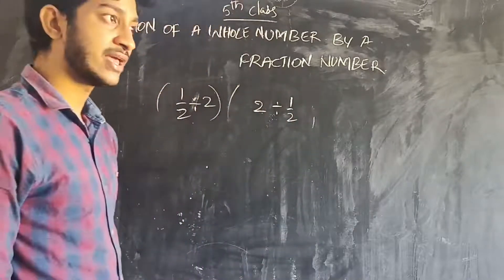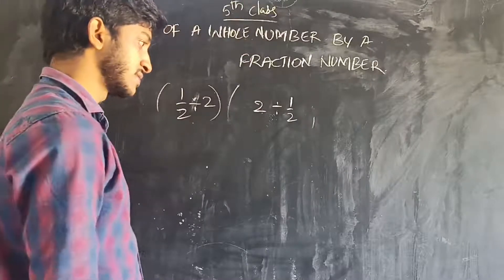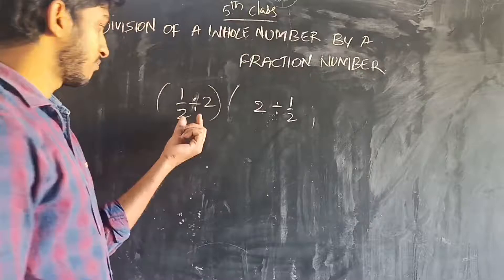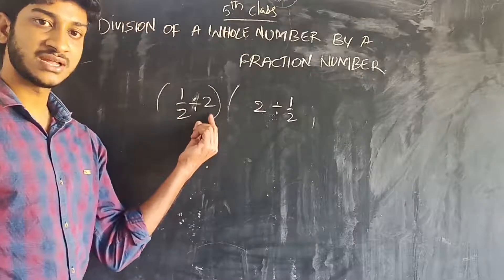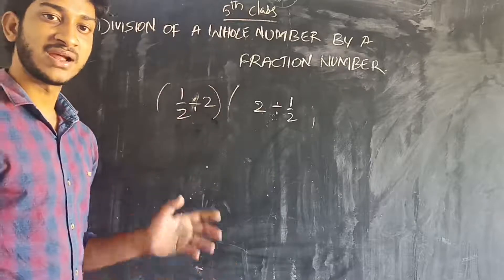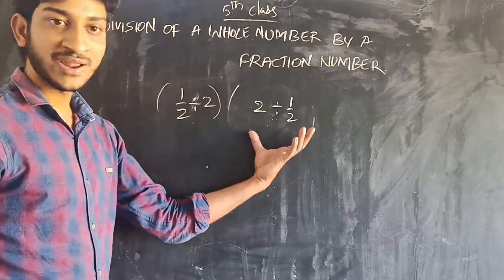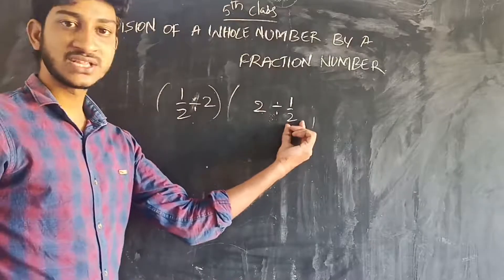How can we divide a whole number by a fraction number? See here, we solve the problem with division and fraction number. We multiply the divisor reciprocally. We use the divisor reciprocally.